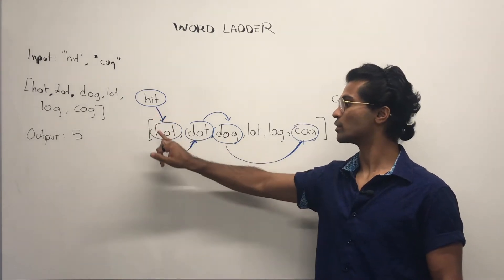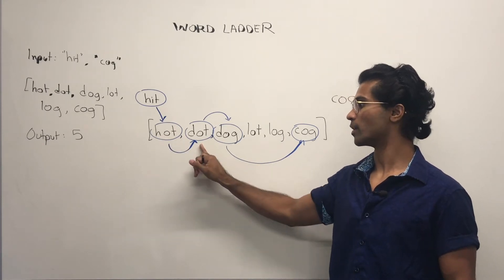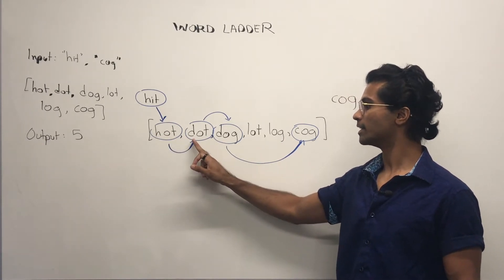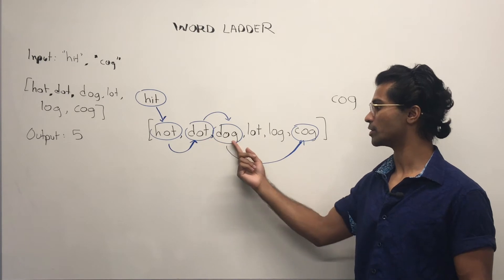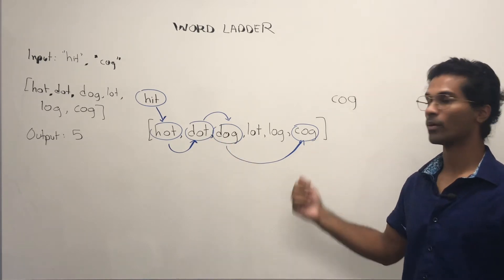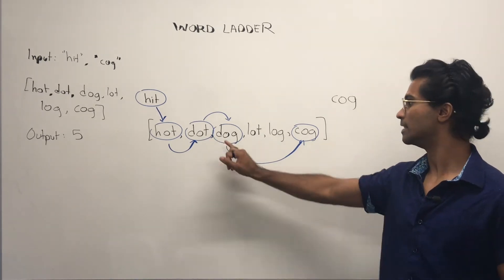We go from hit to hot, hot becomes dot because the H becomes a D, dot becomes dog because T becomes a G, and dog becomes cog which is our end word because D becomes a C.